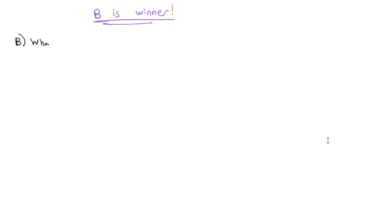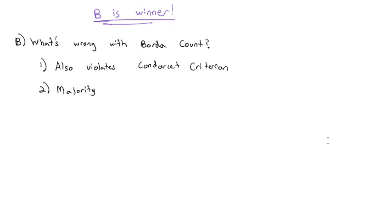What's wrong with Borda Count? Well, a couple things. One is that it also violates the Condorcet Criterion in that it's possible that head-to-head matchups might be violated because of how the point system is established. But another major problem that comes out of it, another fairness criteria that's violated, is called the Majority Criterion.